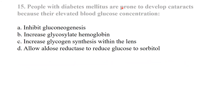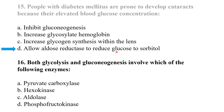People with diabetes mellitus are prone to develop cataracts because their elevated blood glucose concentration allows aldose reductase to reduce glucose to sorbitol. Both glycolysis and gluconeogenesis involve which of the following enzymes? The answer is aldolase.